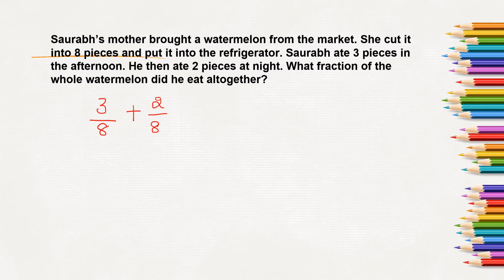So we will add. So 8 remains the same. And 3 plus 2 will be 5. So here we can say Saurab ate a total of 5 by 8 of the whole watermelon. Out of 1 whole watermelon he has eaten 5 pieces.